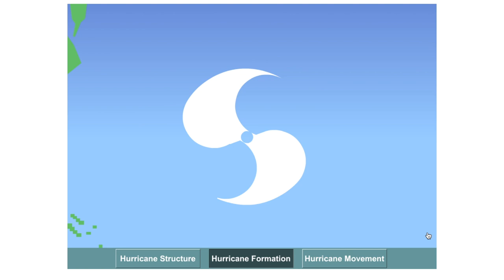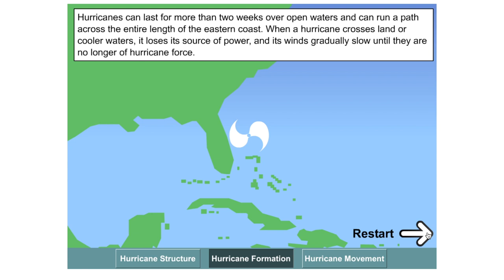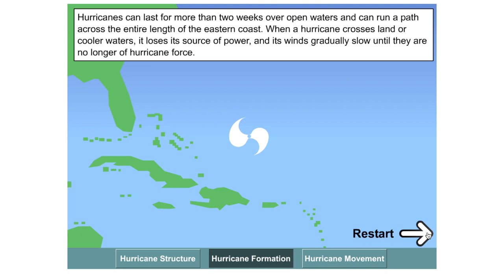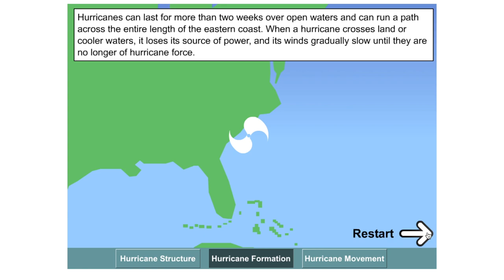These hurricanes can last more than two weeks and as they move across the open waters, they can gain additional energy depending on the sea surface temperature. However, when they begin to cross land or come into contact with land, they rapidly lose their source of energy — the warm water — and they begin to lose energy. The wind speeds gradually reduce until eventually they peter out and no longer have this hurricane force behind them. They then revert back to small tropical storms and will eventually dissipate over land.